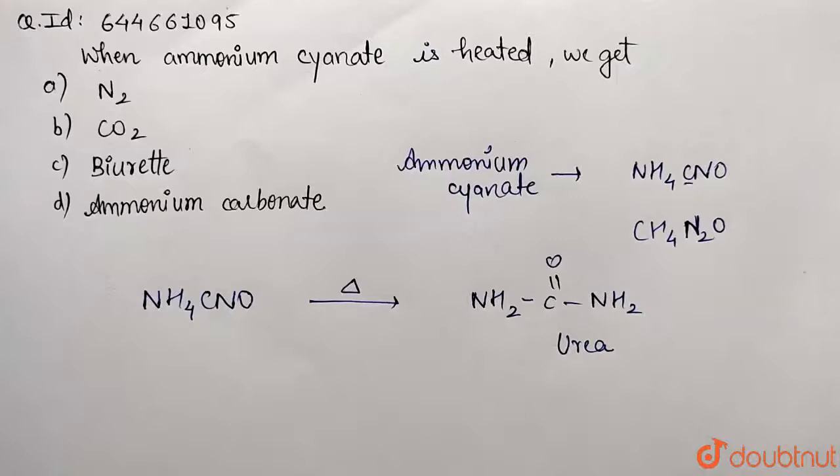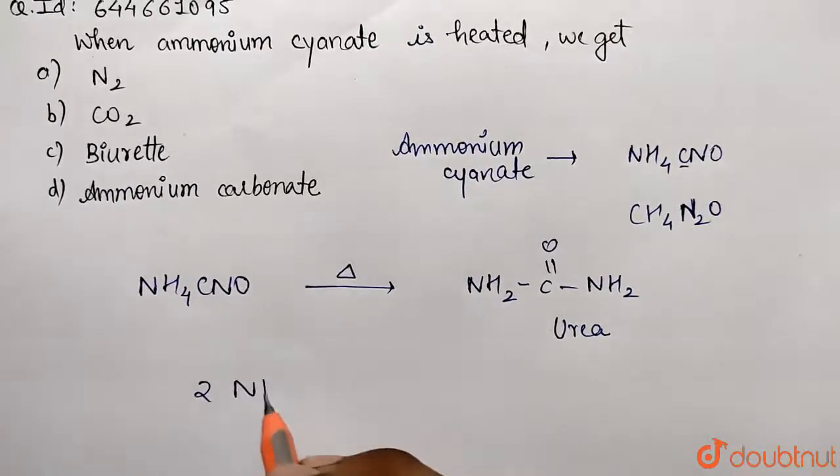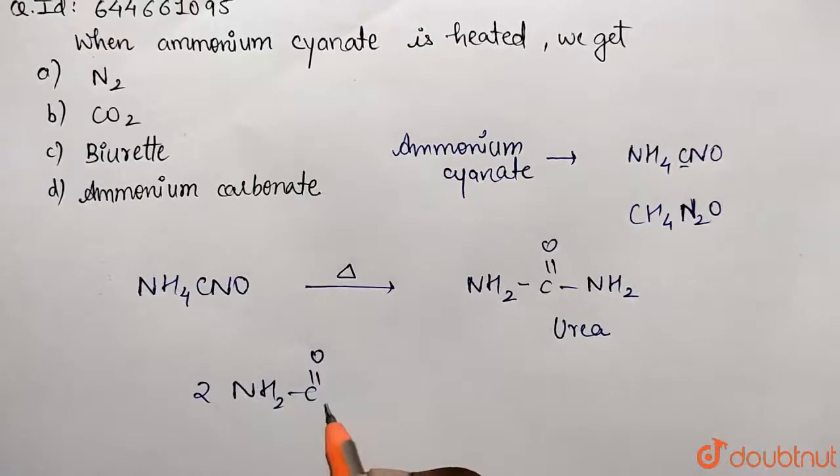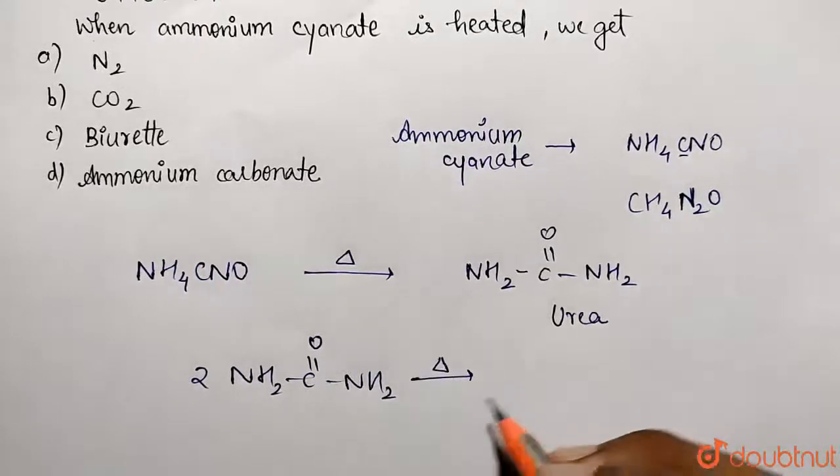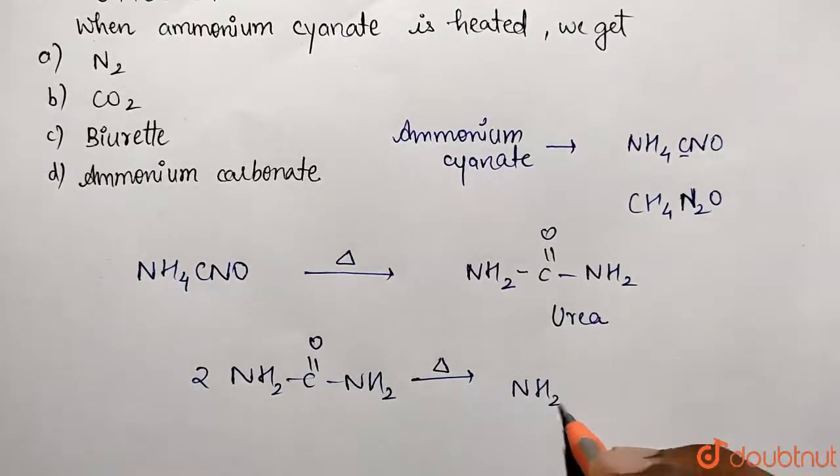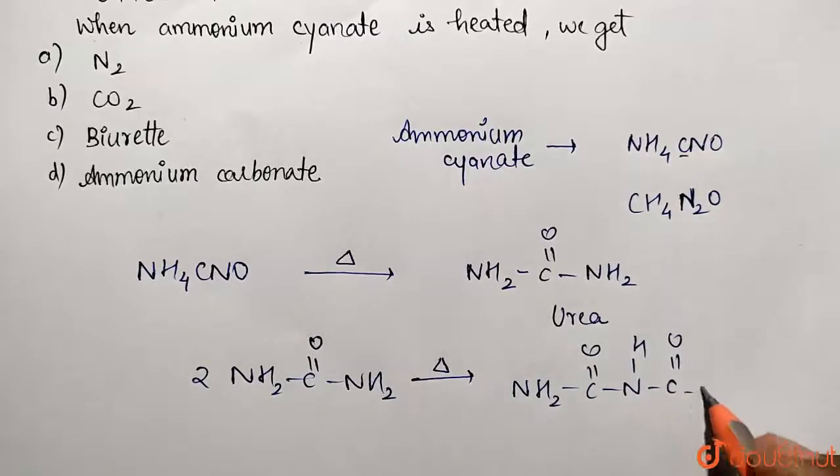Moreover, if further heating, that is long-lasting heating, is continued, then we are going to take urea again. This will be converted to the corresponding biuret product. So this is going to be heated again: NH2-C=O-NH-C=O-NH2. This is called biuret product.